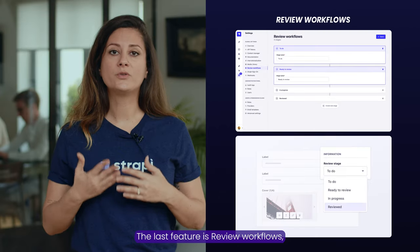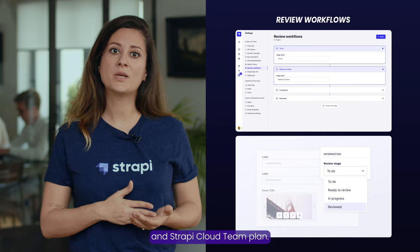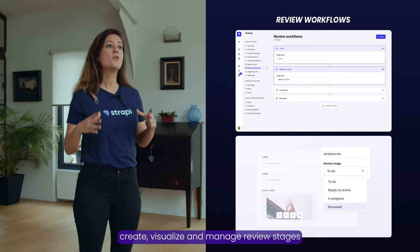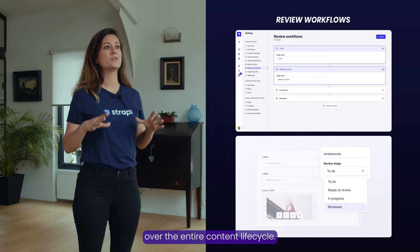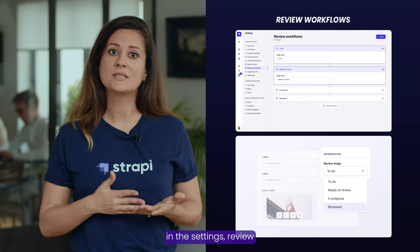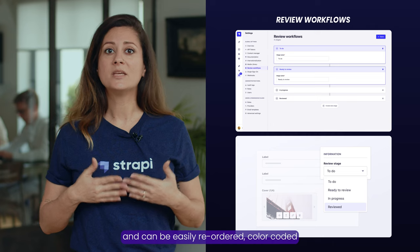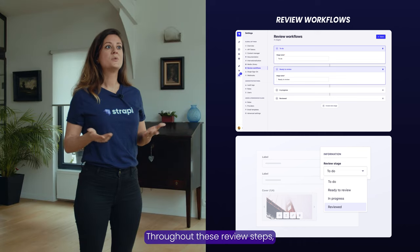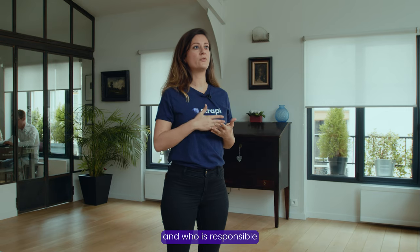The last feature is Review Workflows — a highly requested feature now available in Strapi Enterprise and Strapi Cloud Team Plan. This feature allows content teams to easily create, visualize, and manage review stages for your content, enabling greater collaboration and control over the entire content lifecycle. Once configured in settings, Review Workflows are available in the Content Manager and Content Types Builder, and can be easily reordered, color-coded, and soon assigned to admin users. Throughout these review steps, everyone knows exactly what needs to happen next and who is responsible for ensuring content is published confidently.